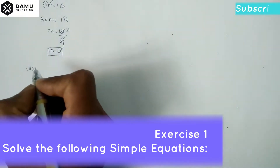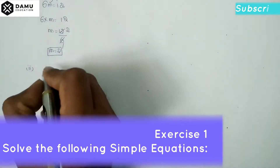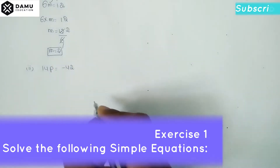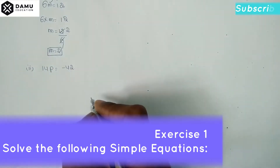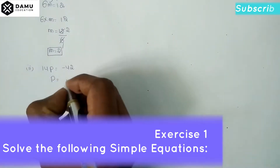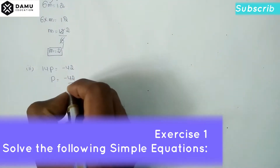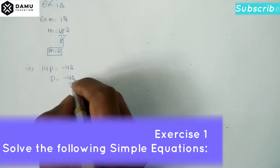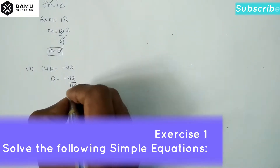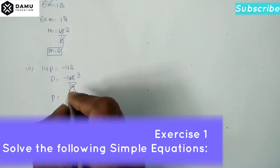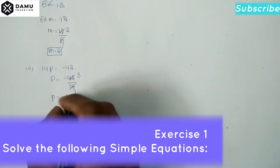The second one: 14p = -42. Then p = -42/14. Since 14 threes are 42, p = -3.